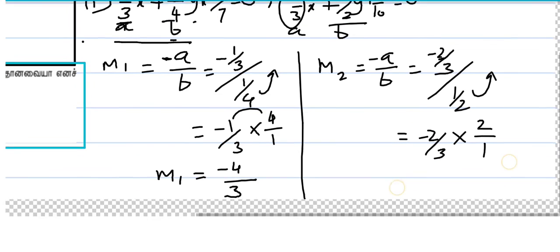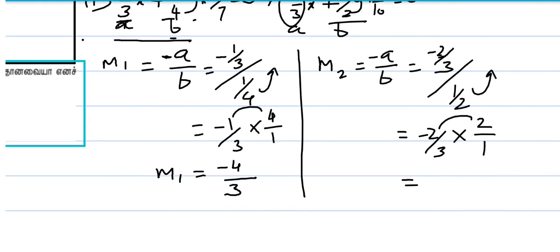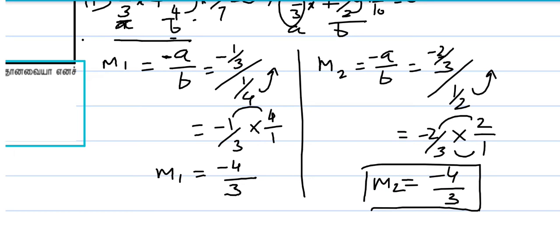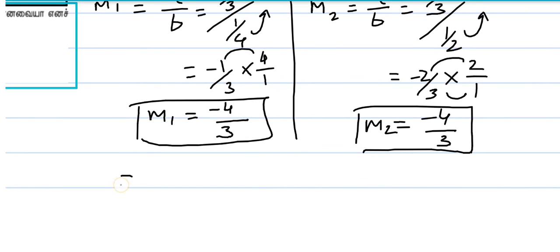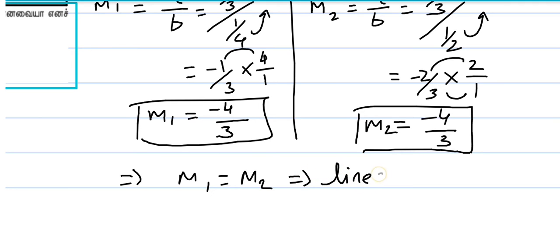So, minus 2 into plus 2 gives minus 4, and 3 into 1 gives 3. So m2 is also minus 4 by 3. Here m1 equals m2, that means the lines are parallel to each other.